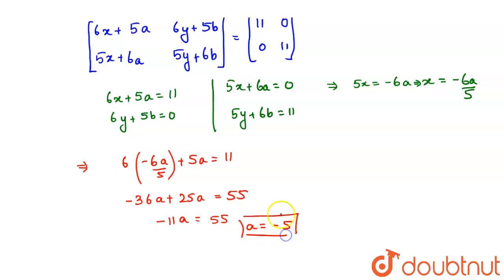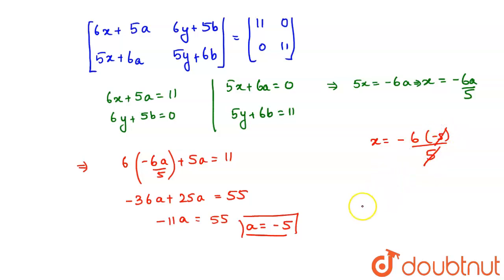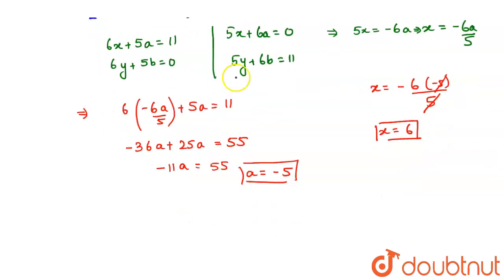With a = −5, substituting back gives x = −6(−5)/5, which simplifies to x = 6. Now we have x = 6 and a = −5. Moving to find y and b: from 6y + 5b = 0, we get y = −5b/6.